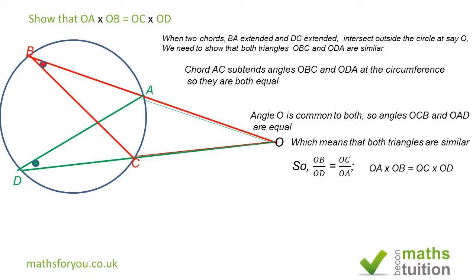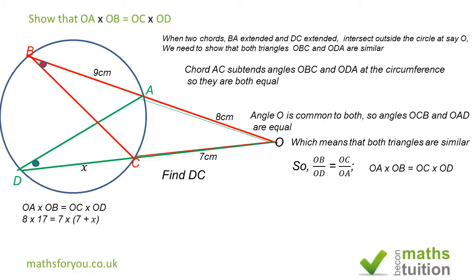Now if I put in some numbers: OA is 8, AB is 9, and OC is 7, and DC we don't know — call it X. So OA times OB equals OC times OD means 8 times OB, where OB is 8 plus 9 equals 17, and that equals OC which is 7 times OD, which is OC plus X, so 7 plus X.